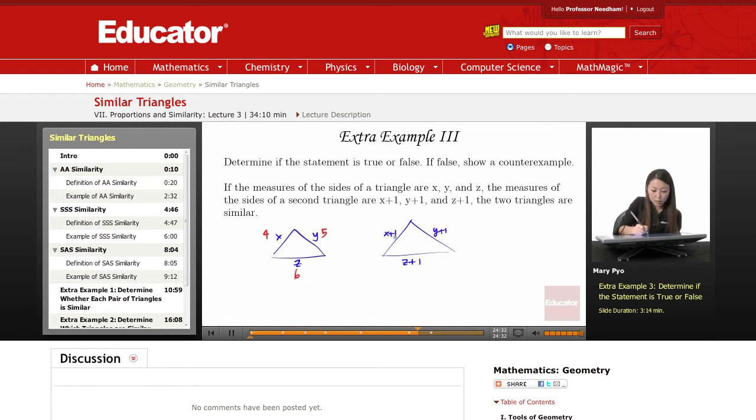Well, x plus 1 is 5, y plus 1 is 6, and z plus 1 is 7. So let's see if the ratios are going to be the same.